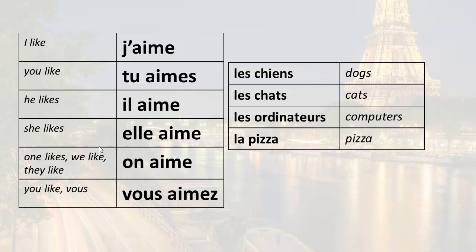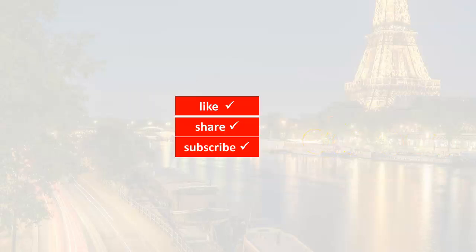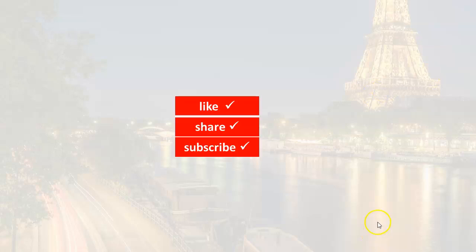The last one is vous — you like — and remember this is the formal you; it can be singular or plural. In this activity we're using it in the plural sense. You like dogs: vous aimez les chiens. You like cats: vous aimez les chats. You like computers: vous aimez les ordinateurs. You like pizza: vous aimez la pizza. That's it for this lesson — thanks for watching! If you found this lesson helpful, please hit the like button, consider sharing this channel with others, and if you haven't already, subscribe. Click on the video that appears on your screen to go on to the next lesson. I'll see you soon — à bientôt!